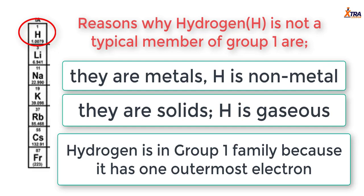Hydrogen can also be placed in group 7, because members of group 7 have seven outermost electrons, meaning they require just one more electron to achieve a stable octet structure. Every group 7 member wants to accept one electron to attain stability like the noble gases. Hydrogen also needs one more electron to attain its own stable duplet structure — it needs two electrons in its outermost shell but has one. So hydrogen can be put in groups 1, 4, and 7.